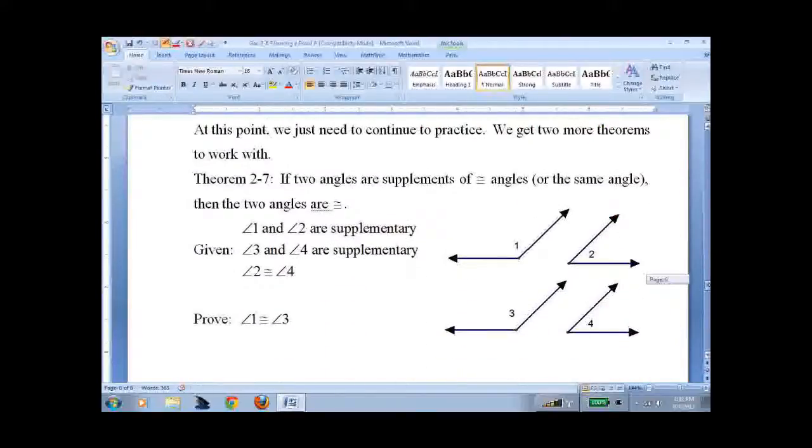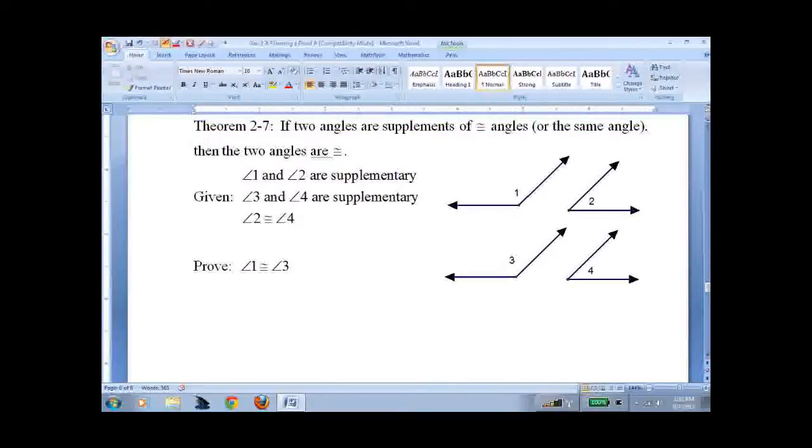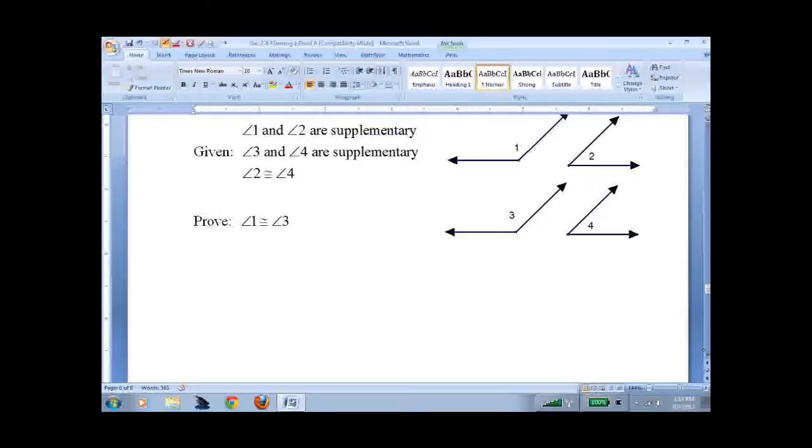So I'm going to give you a bunch of proofs to work on. Here's one now, and it's very much an obvious theorem. If angle 1 and angle 2 are supplementary, and angle 3 and angle 4 are supplementary, and these two angles are congruent, then these two are congruent. What I'd like you to do is pause the recording and see what you can do with this. I'm going to go ahead and solve it as best I can.